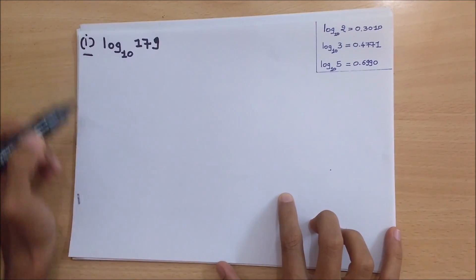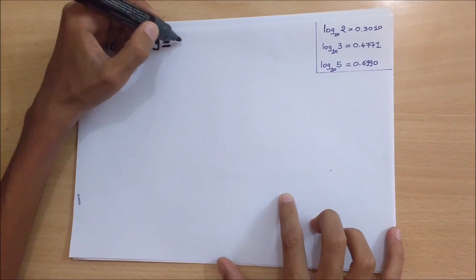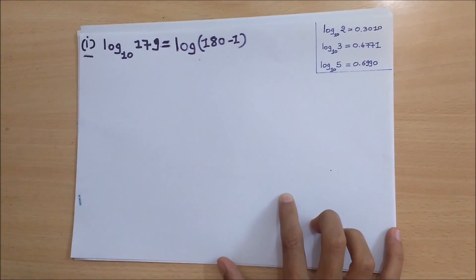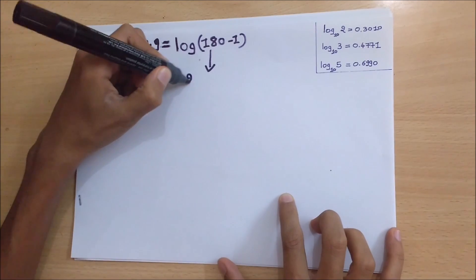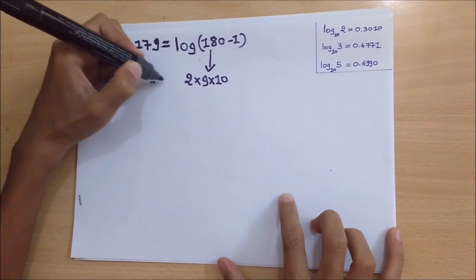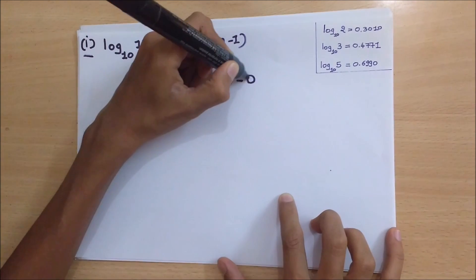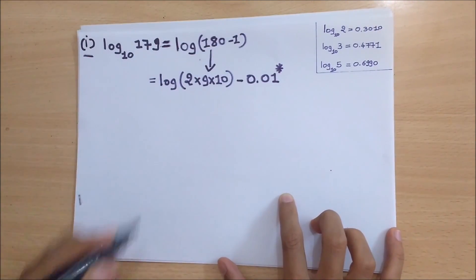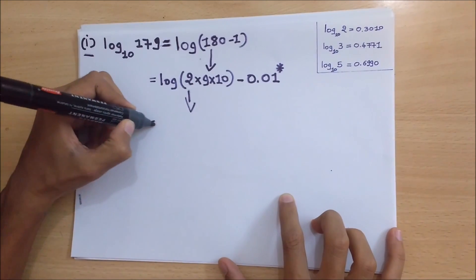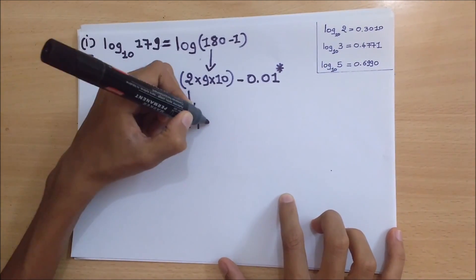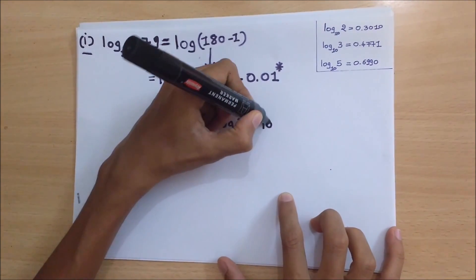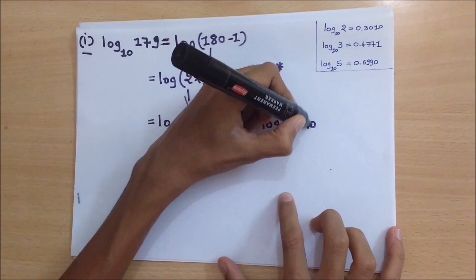Our first example is log of 179. We can write it as log of 180 minus 1. Now 180 equals 20 into 9, or 2 into 9 into 10. So we can write the previous term as log of 2 into 9 into 10, minus 0.01 — note that 0.01 is an estimated value. Now we can write this as log of 2 plus 2 times log of 3 (since 9 is the square of 3), plus log of 2 plus log of 5, minus 0.01.